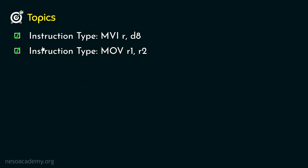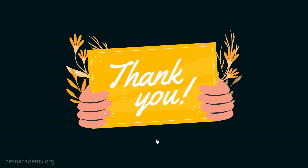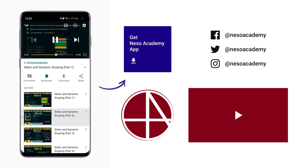So in this session we covered two instruction types: MVI R,D8 — where the 8-bit data is moved immediately into the specified register R — and MOV R1,R2 — where R2 is the source and R1 is the destination, and although we call it MOVE, we are basically performing a copy. In the next session, we are going to learn about two more instruction types of the data transfer group. Thank you all for watching — I'll see you next time.